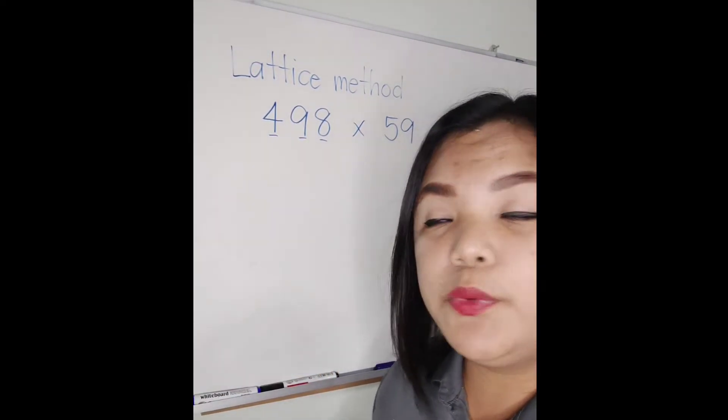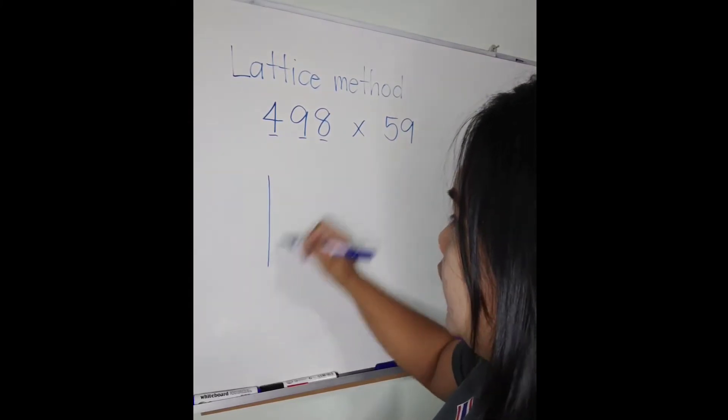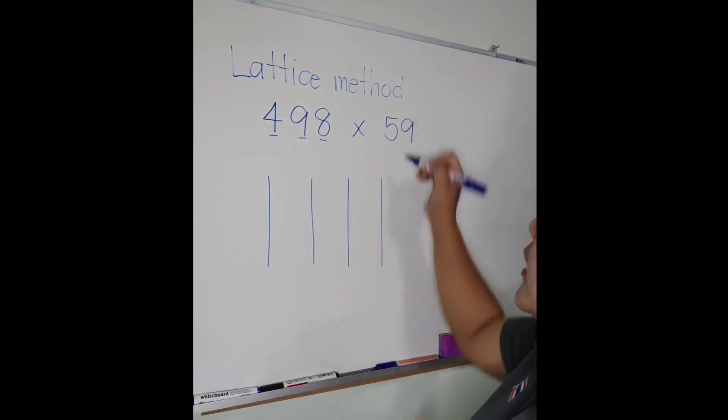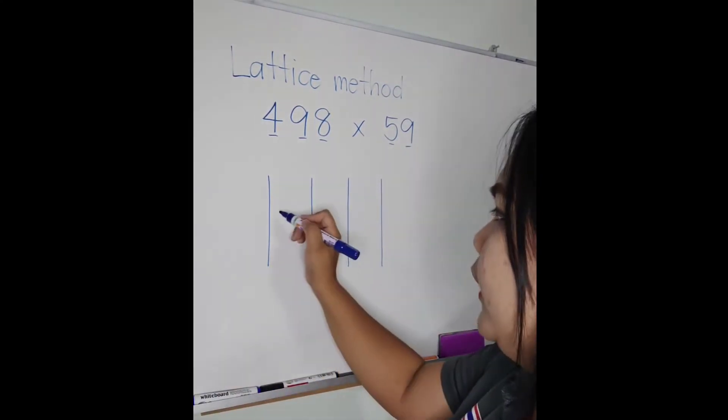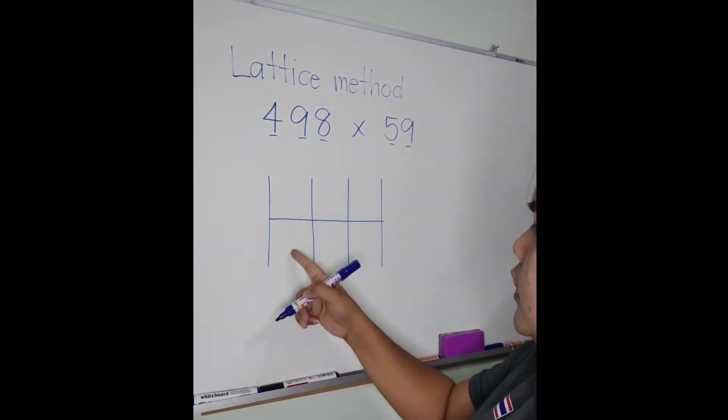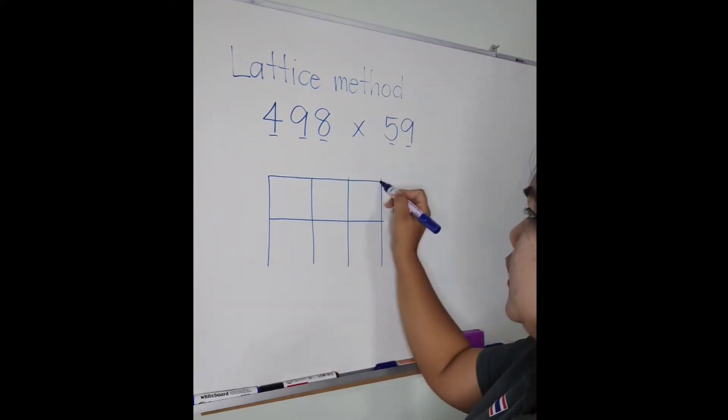Ready? First, count the number of the first number. So we have three digits here. So what we are going to do is to put or make three columns. Next, how many digits here? We have two, so make two rows, 1, 2, and then make a box.